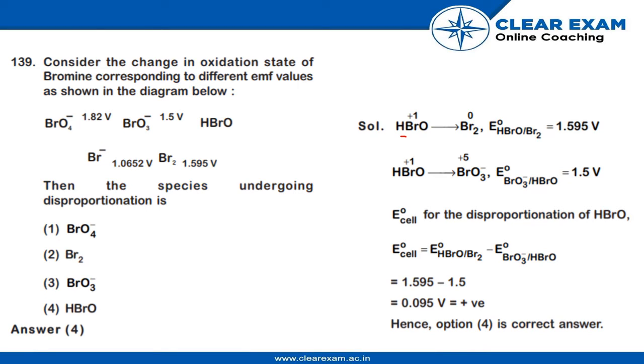it gives us BR2 gas and HBRO. BR2 gives us a value of EMF of 1.595V. So we know that E°cell for the disproportionation of HBRO would be equal to E° of HBRO/BR2 minus E° of BrO3/HBRO.